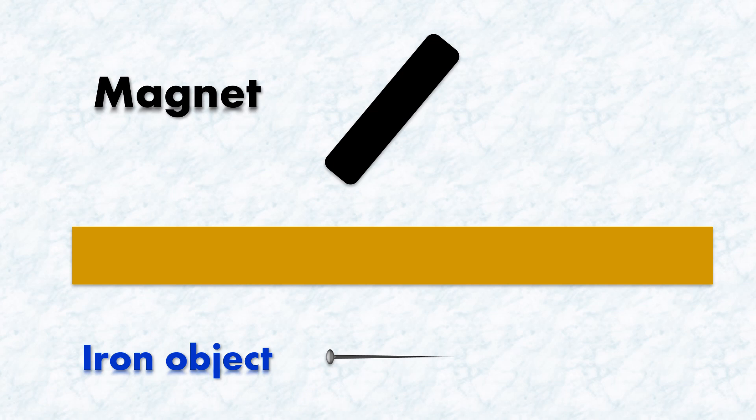Whether the force of attraction exerted by the magnet on the iron object will decrease or increase? Since the magnet cannot attract the needle effectively when placed at the same distance, it is quite evident that the force of attraction will decrease.